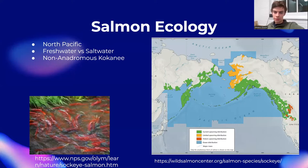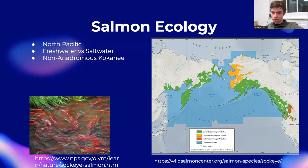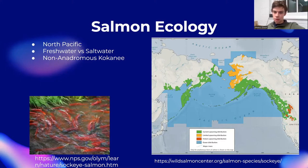The salmon die within two weeks after spawning. The salmon are anadromous, meaning they live in both freshwater and saltwater. Because of this, they are able to bring nutrients from the ocean back into lakes and rivers. Although most live in freshwater and saltwater, kokanee salmon are a variety of sockeye that are landlocked and live in lakes their entire lives.